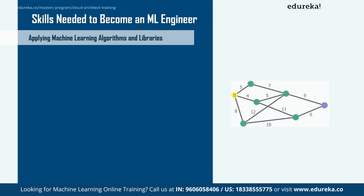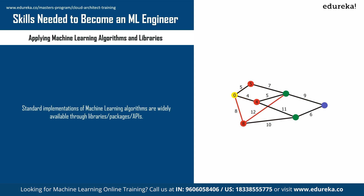Applying machine learning algorithms and libraries is also very important. Standard implementations are available through libraries like TensorFlow and scikit-learn, but applying them effectively involves choosing a suitable model — such as a decision tree, nearest neighbor, or neural network — and a learning procedure to fit the data. Understanding how hyperparameters affect learning, being aware of the advantages and disadvantages of different approaches, and understanding bias-variance tradeoff, overfitting, and underfitting are all critical. Data science challenges on platforms like Kaggle are a great way to get exposure to different kinds of problems.